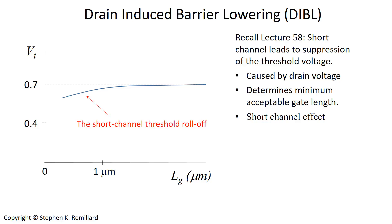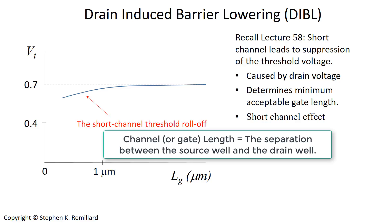In this video I am going to explain the cause of threshold roll-off in short channels. We saw this in a previous lecture. Below a 1 micron gate length there is a suppression of the threshold voltage, which then raises the leakage current through short channel devices.